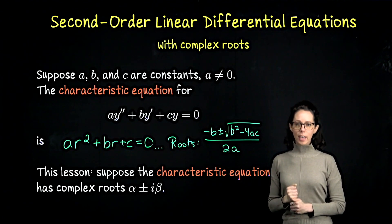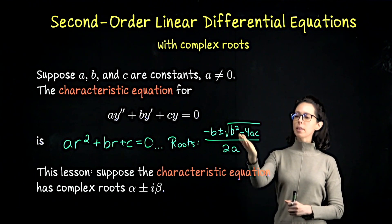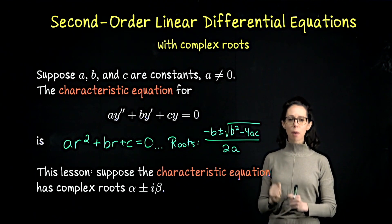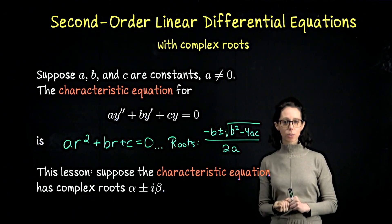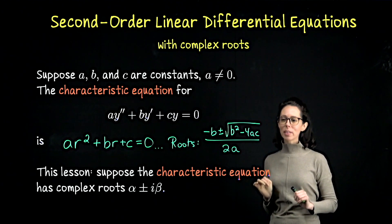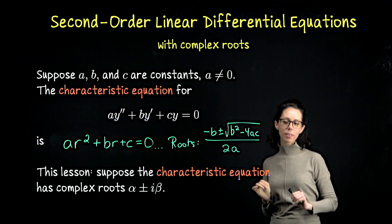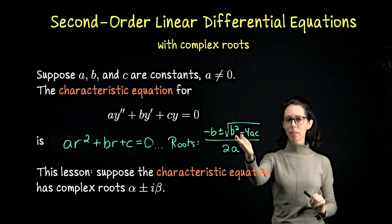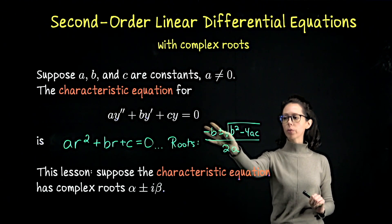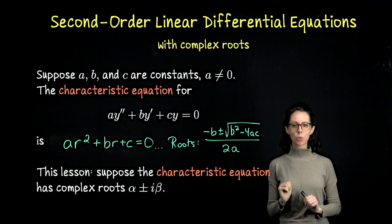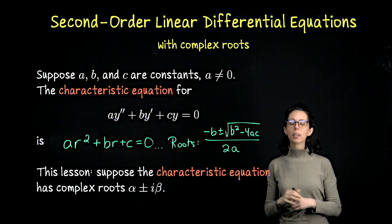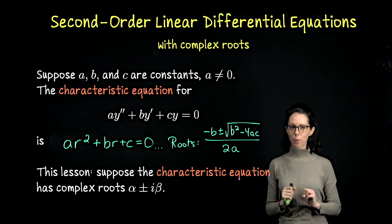Our first case was when the discriminant inside the square root is positive — then we get real and distinct roots, and we handled that situation. Then we asked: what if the discriminant was zero? Then we would have one real root of the form negative b divided by 2a, which would be a repeated root, and we handled that situation as well.